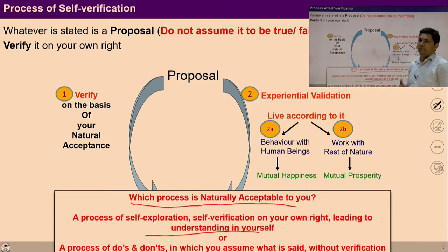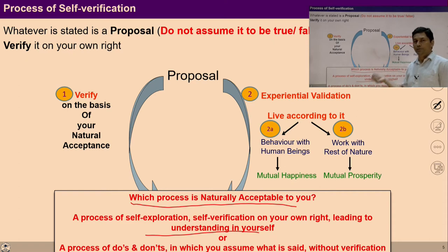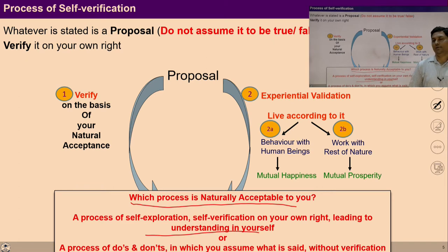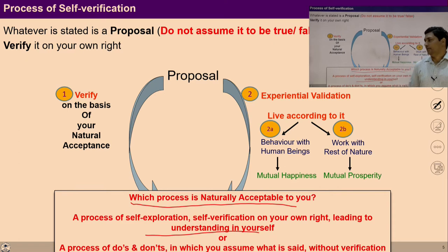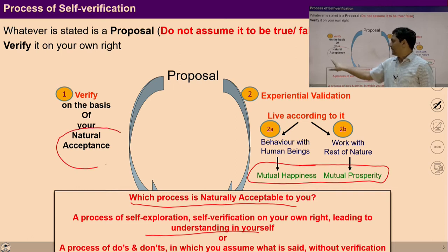Again you can ask these questions because we are trying to self-study. Self-study means I am investigating myself, trying to find out my innateness. Whatever is in UHV 2, UHV 3, or UHV 4 is in the form of proposals, and you have to verify these proposals on the basis of your natural acceptance. If you find they are naturally acceptable, continue; otherwise keep it open and take the help of teachers. The outcome of living according to these proposals would be mutual happiness and mutual prosperity.